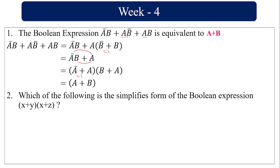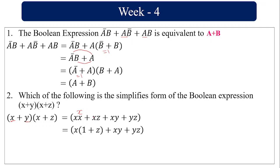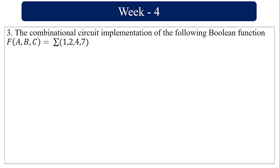Which of the following is the simplified form of the boolean expression (x + y)(x + z)? Multiplying out: x·x + x·z + x·y + y·z. Since x·x = x, we get x + xz + xy + yz. Taking x common from x + xz gives x(1 + z) = x, and x + xy = x(1 + y) = x. The simplified form is x + yz.